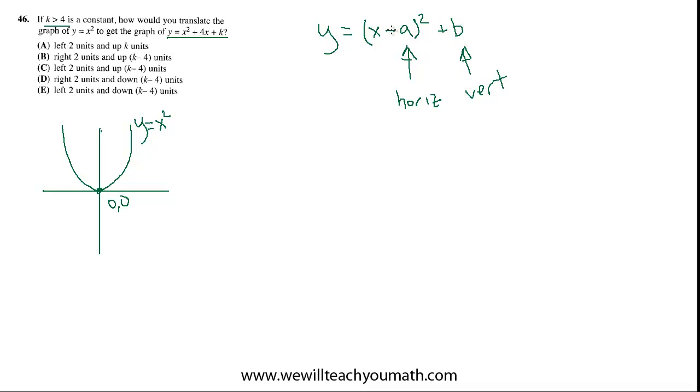If it's negative b, it moves it down. If this is x plus something, that moves it to the left. So, the question is, can we rewrite this that way? And we can. We do that by completing the square.